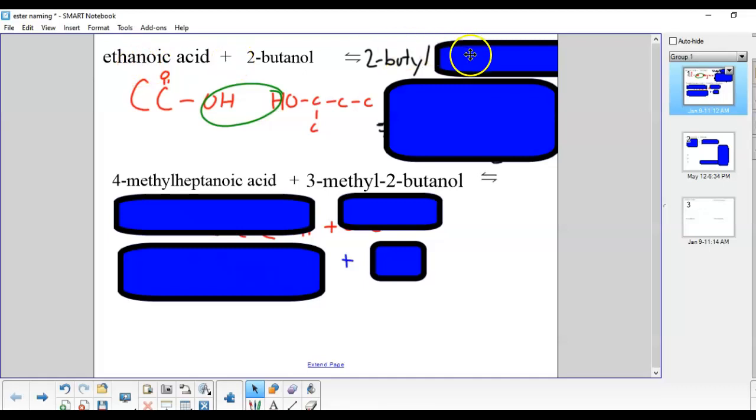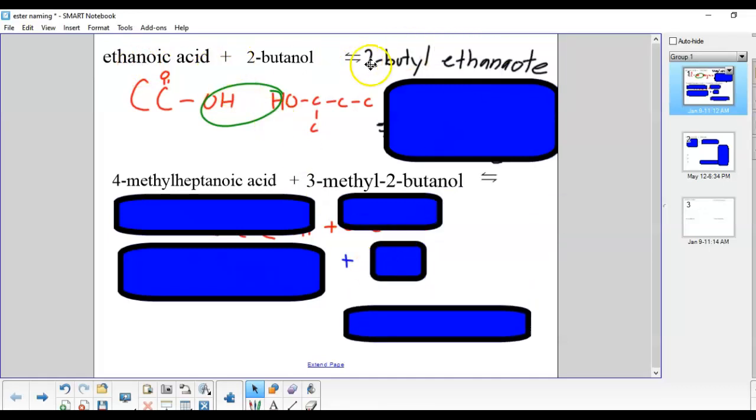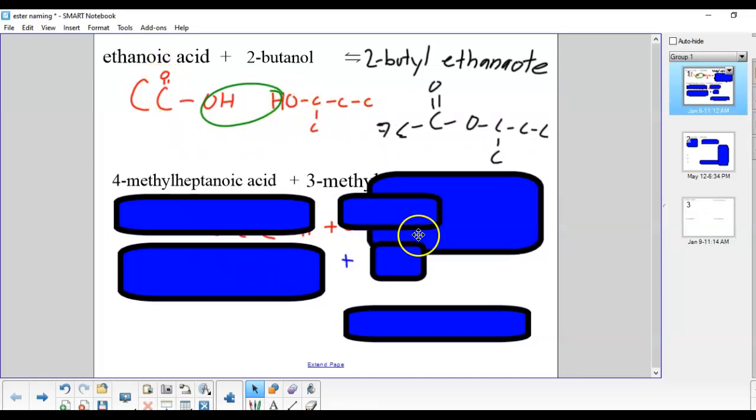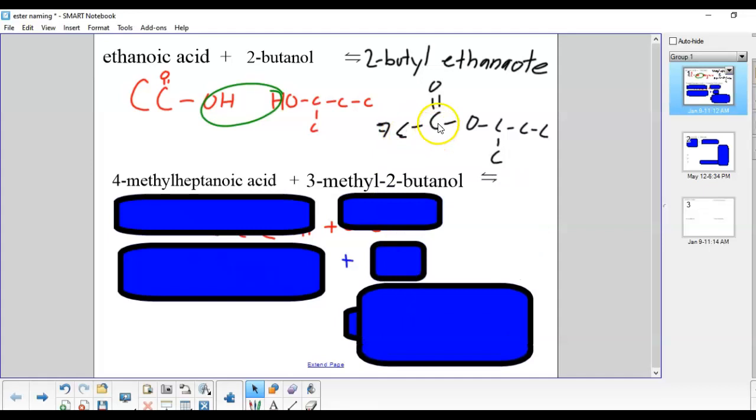So this is two-butyl ethanoate. How would we draw its structure? Well, you can see here how I've clipped out the water. The ester linkage is going to be between the carbon in the ethanoic acid and oxygen on the alcohol. Carbon one and two, that's over here. Here's the O from the alcohol and then its attached carbon chain.